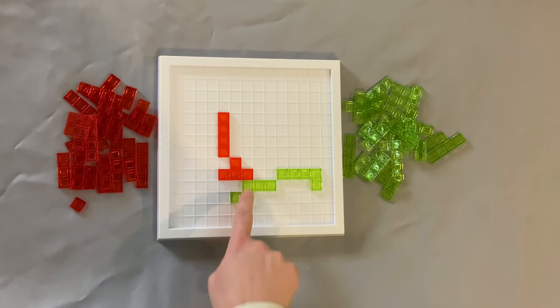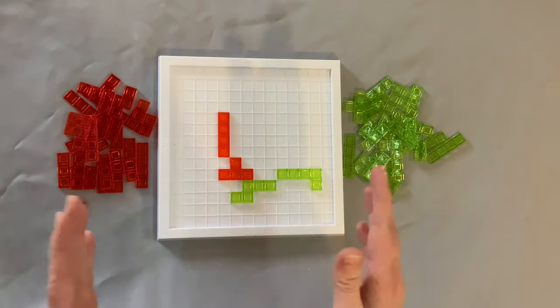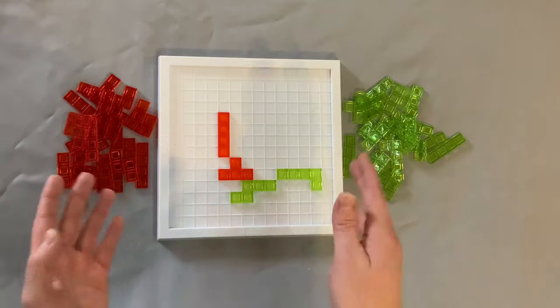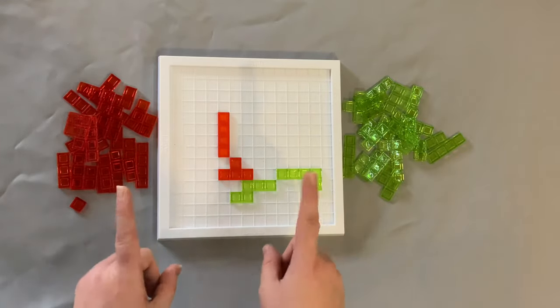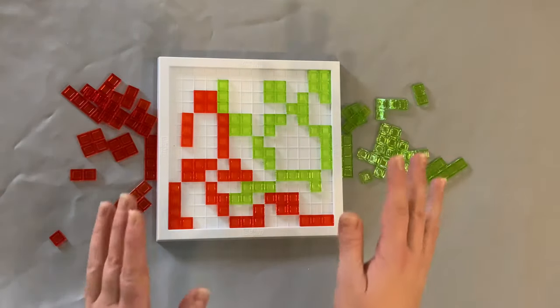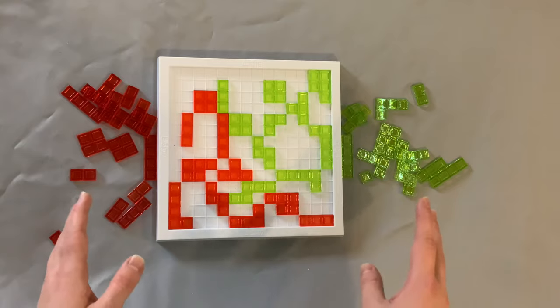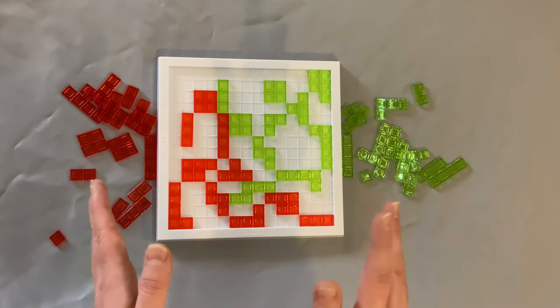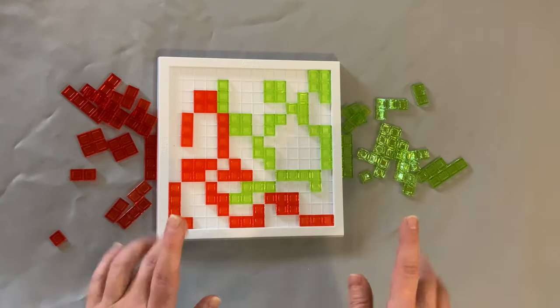Once you place a piece on the board it cannot be moved. Eventually what will happen is a player will not be able to play a piece because as you play the game the board is going to get progressively more crowded and it's going to become more difficult to put your pieces on. The game will eventually end when neither player can place any more pieces.